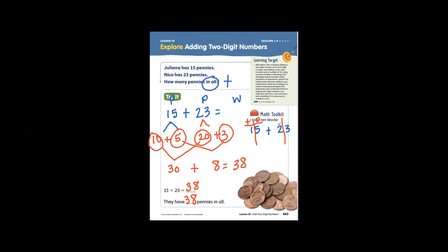For 15, draw 1 ten stick and 5 ones: 1 one, 2 ones, 3 ones, 4 ones, 5 ones. Then we are adding 2 more tens and 3 more ones: 1 one, 2 ones, 3 ones.